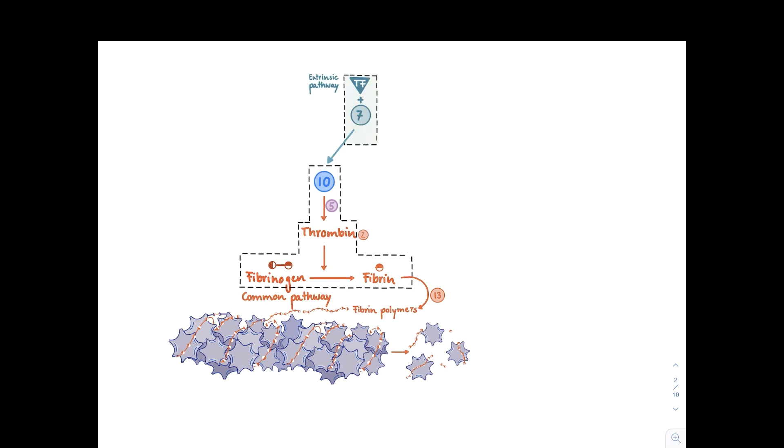So next what we want to discuss is how do we get factor 10 activated? Who does that? Well there's actually two ways how you can get factor 10 activated. There is a so-called extrinsic pathway and that relies on tissue factor and factor 7. So extrinsic refers to that it's not within the blood vessel. If you have an injury, there's subendothelium exposed, there's tissue exposed and this contains tissue factor. And then tissue factor together with factor 7 in the blood can then activate factor 10.